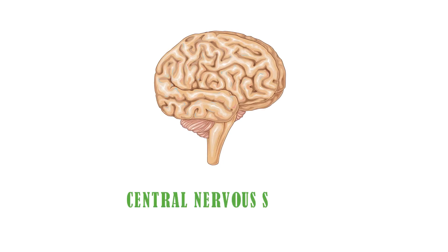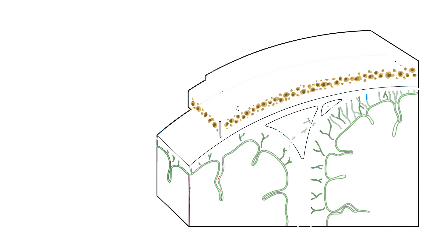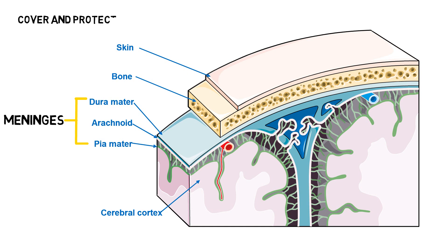The brain is the part of the central nervous system. The brain is housed inside the bony covering called cranium. Between the skull and brain is the meninges, which consists of three layers of tissue that cover and protect the brain and spinal cord.